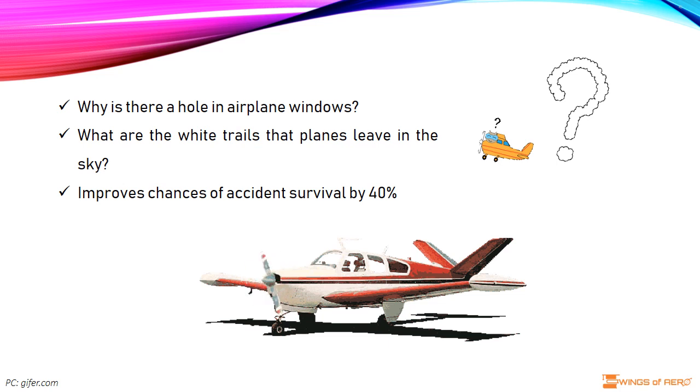What are the white trails that planes leave in the sky? Those white lines in the sky are called vapor trails or contrails, and they are the result of aviation fuel being burned.